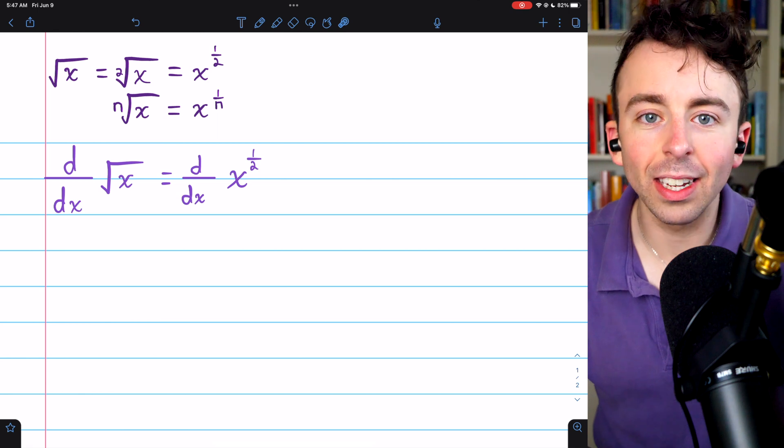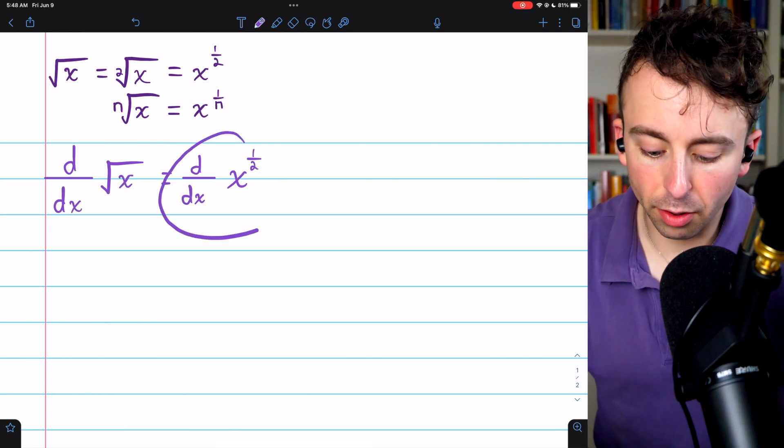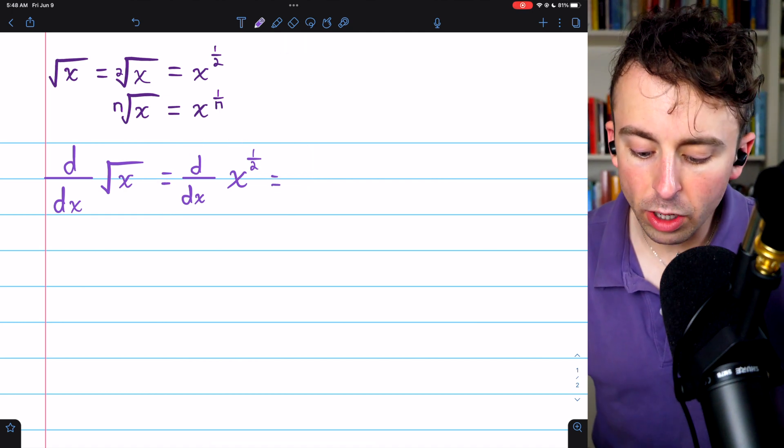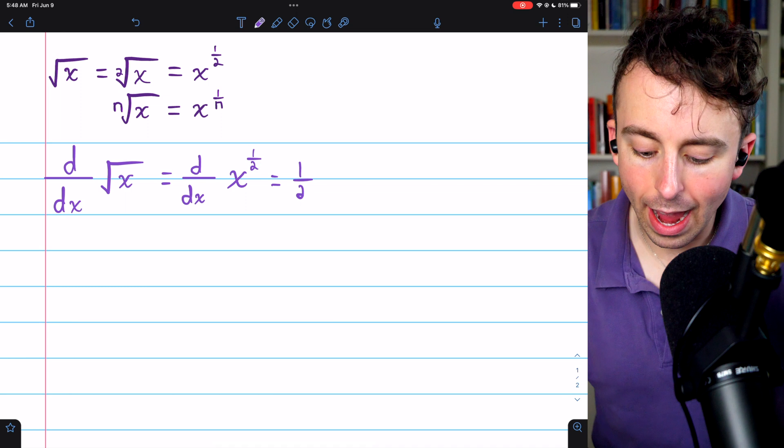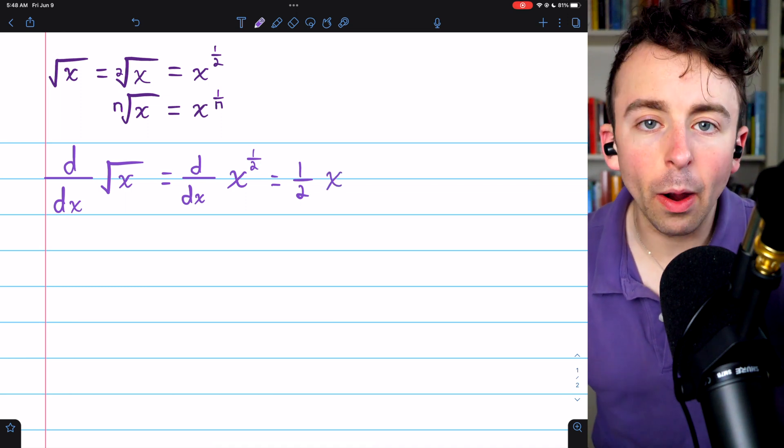So we can always use the power rule to take the derivative of these types of functions. Then, to take the derivative of the square root of x, which is x to the one-half power, we just bring the power of one-half down as a factor and then reduce the power by 1.